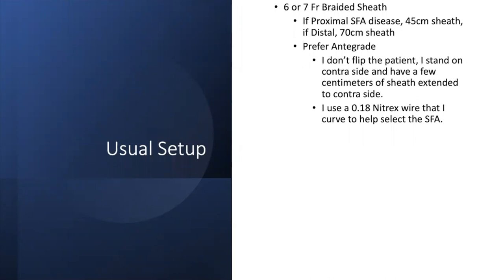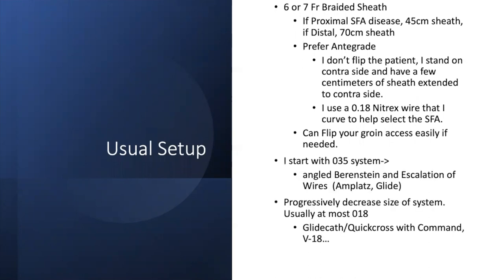If I'm going antegrade, usually my access wire is a Nitrex wire. It just has quite a bit of support with a small shapeable tip and it helps it curve and select the SFA. You can do this under ultrasound - you can see the SFA and profunda and you can actually curve the wire anterior, which is the way the SFA goes, and have a better shot at going in there. Then I'll show you a flipping technique where if you want to do everything from one groin, you can go up as if you're going up and over, do your initial angiogram, and then you can flip your access and go back down that leg to do your treatment.